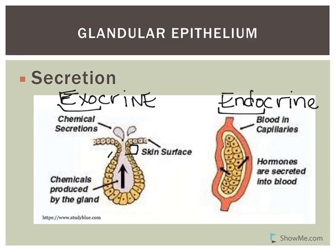Now we'll discuss some types of secretions, specifically exocrine gland secretions. Exocrine glands can be classified by the type of secretion, which we'll discuss today, as well as by the structure of the glands.